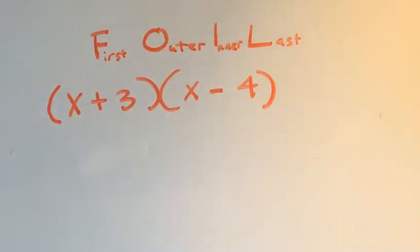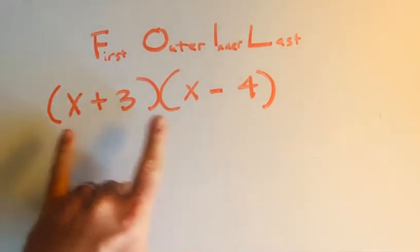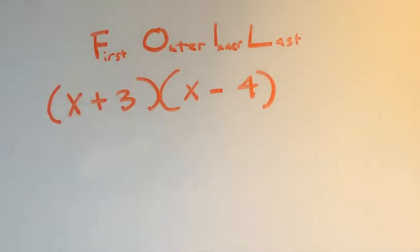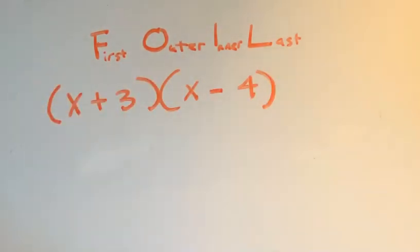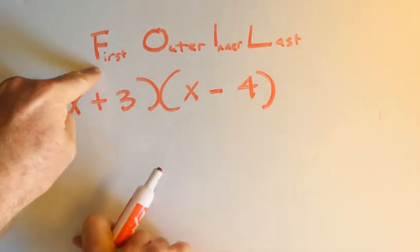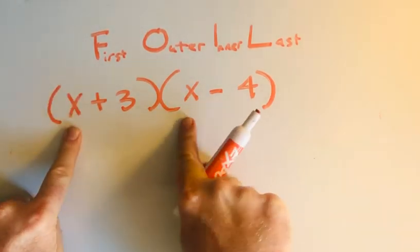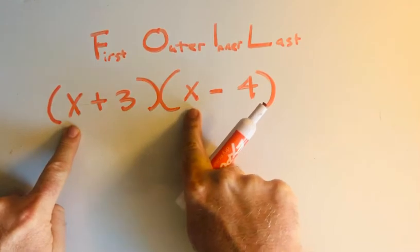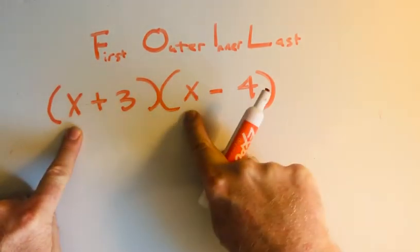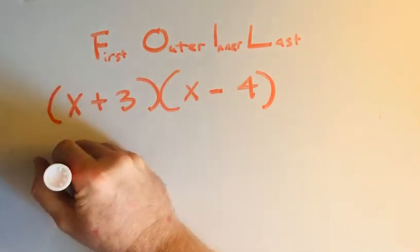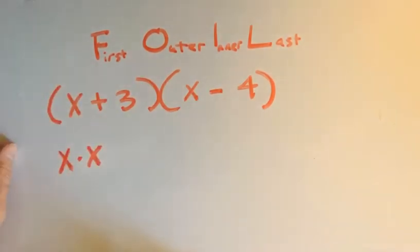The way we do this is if I have two binomials and I'm multiplying them together, I will use this concept of FOIL to multiply them. So I'm going to do the first term in each parenthesis and multiply them together. The first term of this parenthesis is x, the first term of this parenthesis is x, so I will do x times x.